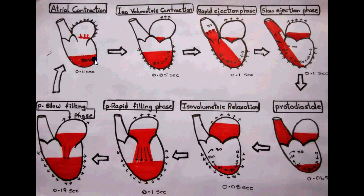Many patients with atrial pathology, like atrial fibrillation, can easily survive years without suffering from any circulatory insufficiency. During atrial contraction, only 20% of the blood is forced from the atria to the ventricles.